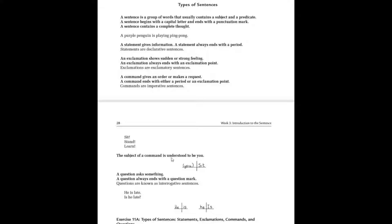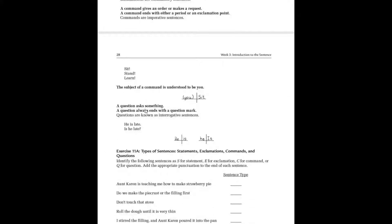Since the sentence just says 'sit,' it's understood to be talking to you. When you diagram an imperative sentence, we say 'you understood' — because the word 'you' is not there but it's understood to be you. You always put 'you understood' in parentheses. That lets the reader know this word is not in the sentence but is understood to be you. This only applies to imperative sentences.